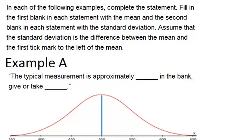It says in each of the following examples complete the statement. Fill in the first blank in each statement with the mean and the second blank in each statement with the standard deviation. Assume that the standard deviation is the difference between the mean and the first tick mark to the left of the mean.